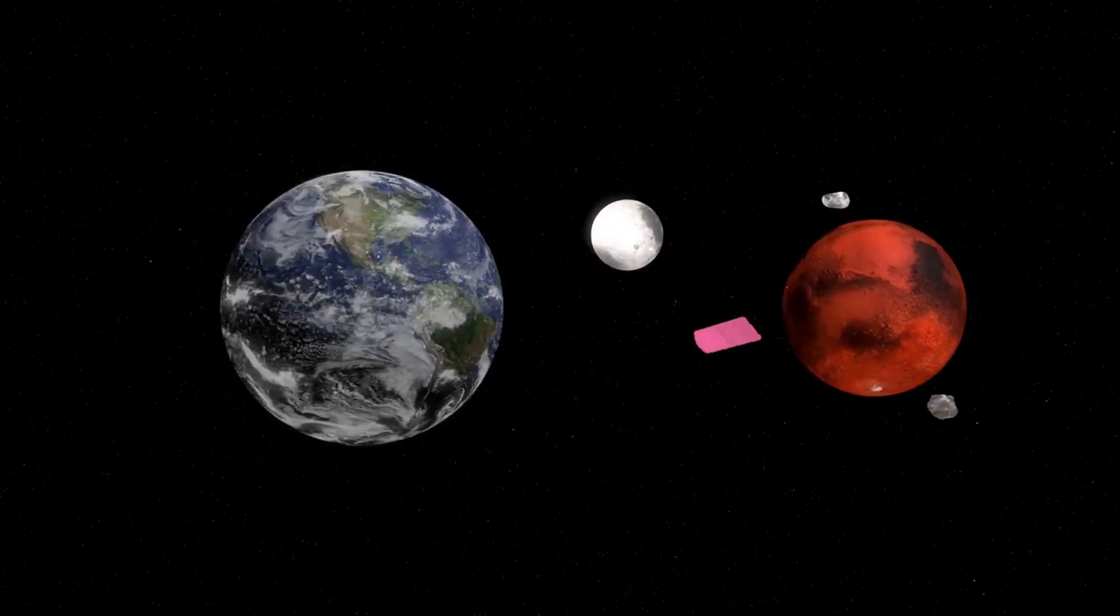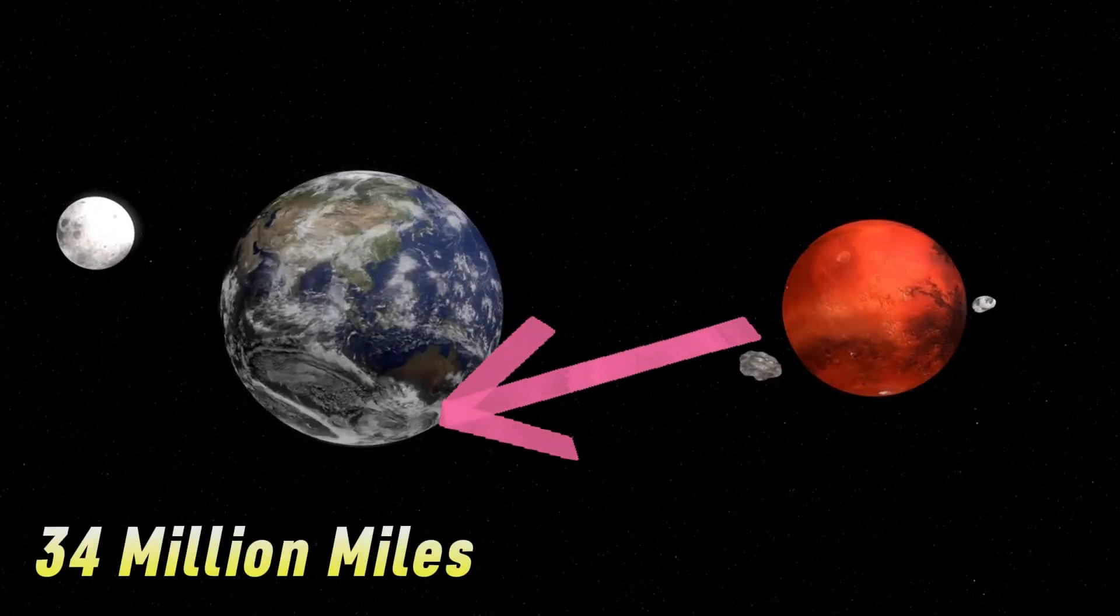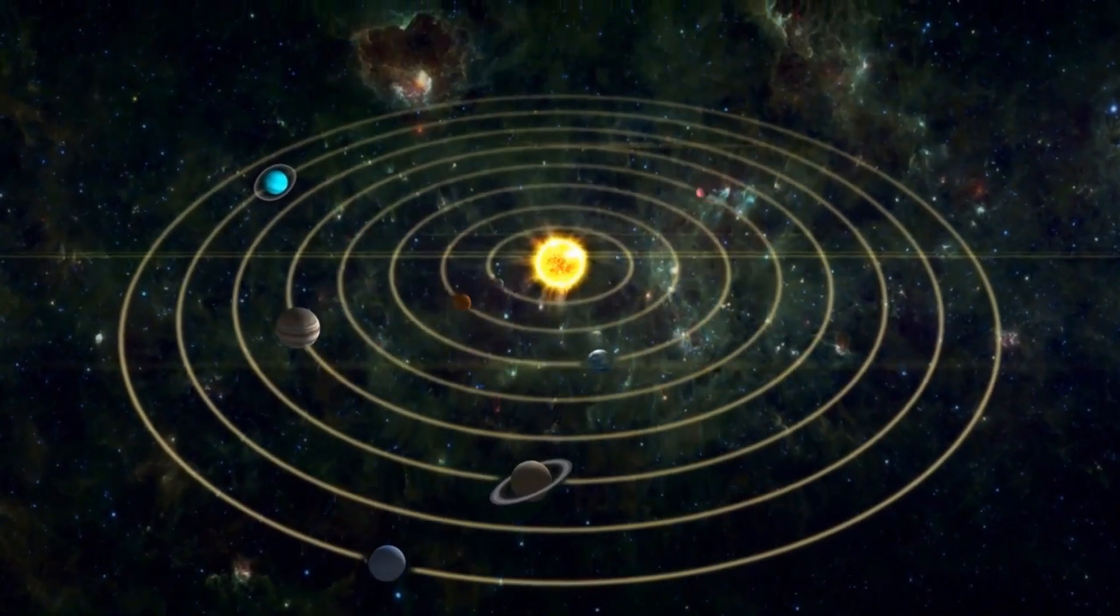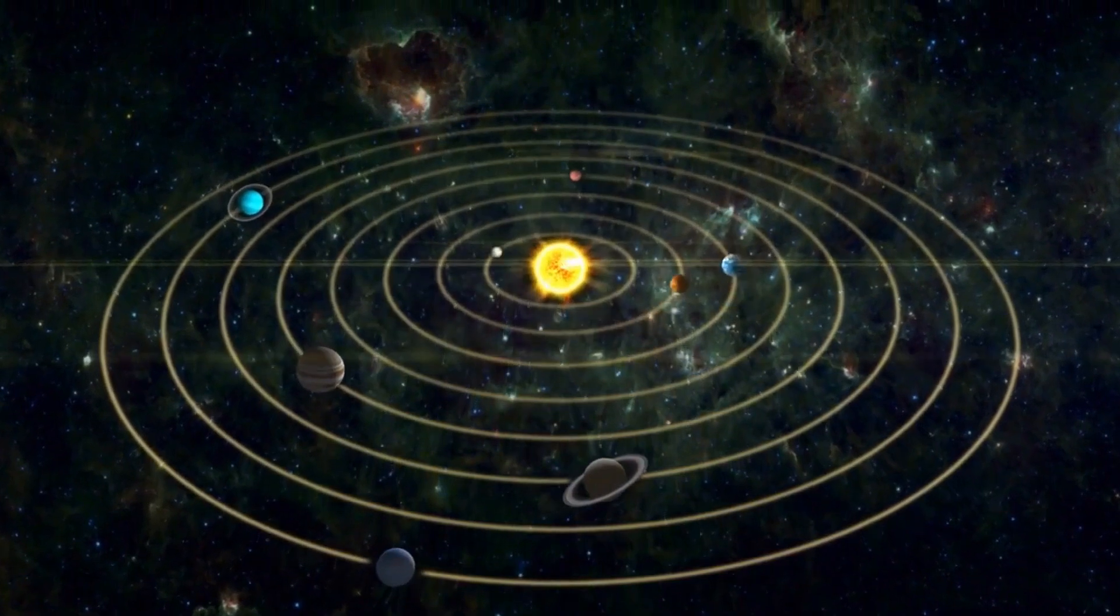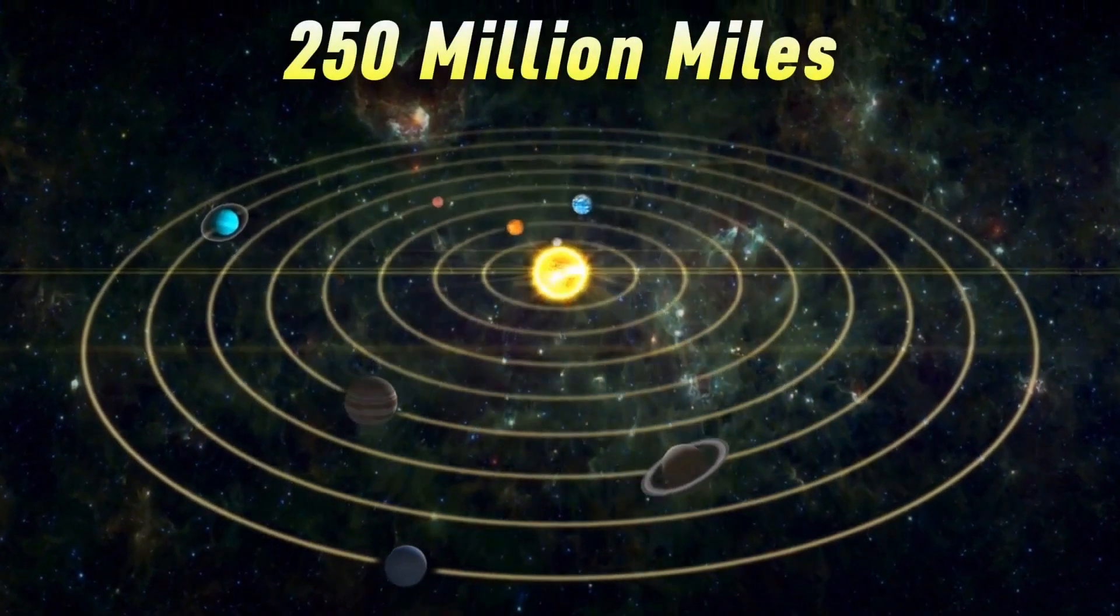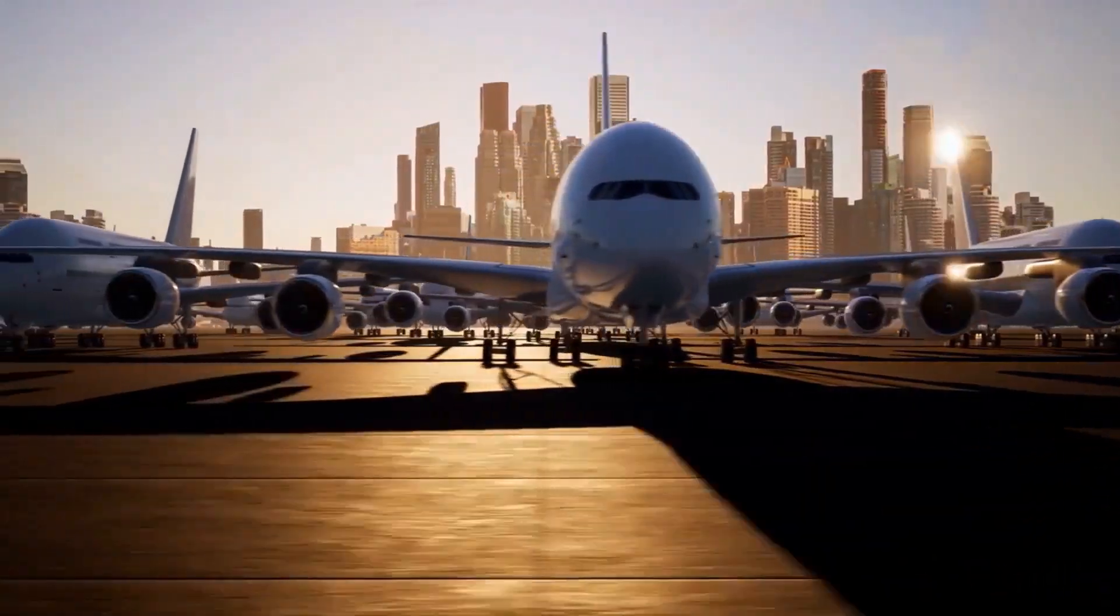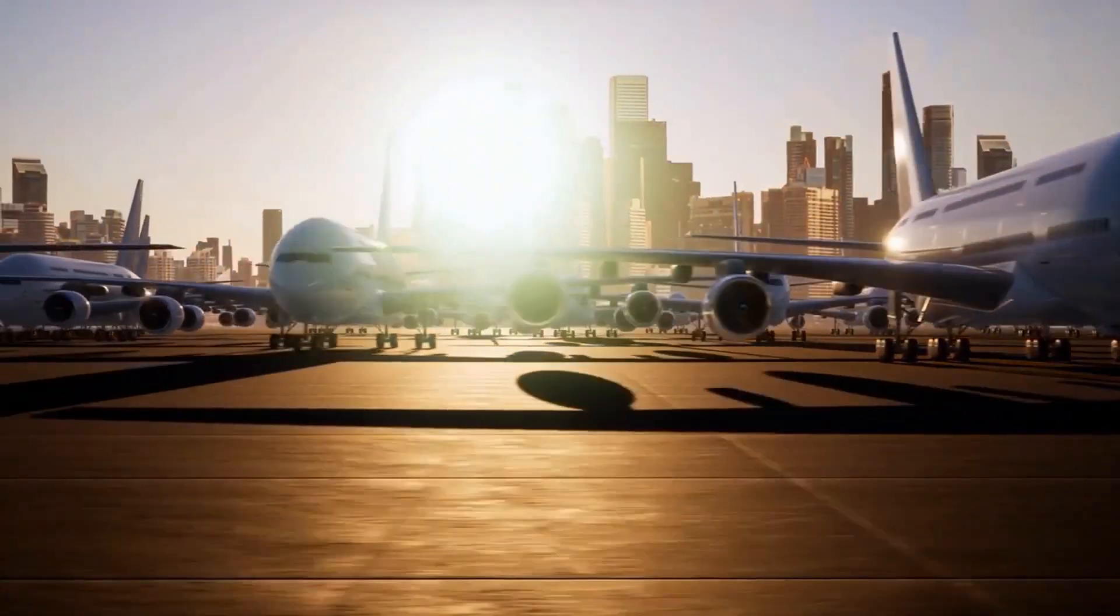When Mars and Earth are closest, they're about 34 million miles apart. But when they are on opposite sides of the Sun, that distance can stretch to a whopping 250 million miles. To give you an idea, if you hopped on a jet to Mars, it would take you over 50 years to get there.